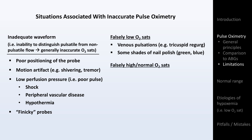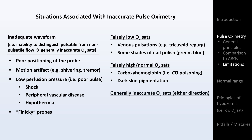Causes of falsely high or falsely normal O2 sats include the presence of carboxyhemoglobin, as seen in carbon monoxide poisoning, and dark skin pigmentation. Causes of generally inaccurate O2 sats — meaning they can be either falsely high or falsely low — include the presence of methemoglobin, which is a rare but serious side effect of some medications, and ironically, hypoxemia itself. That's right: the lower the O2 sat is, the less accurate the reading.